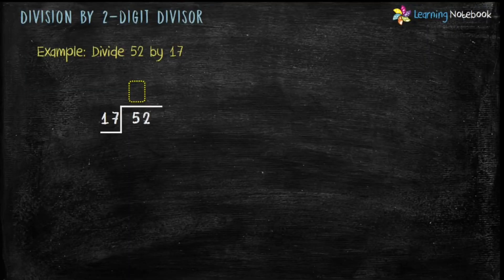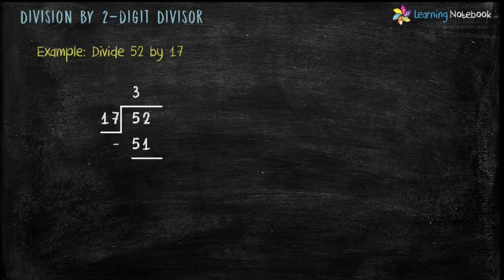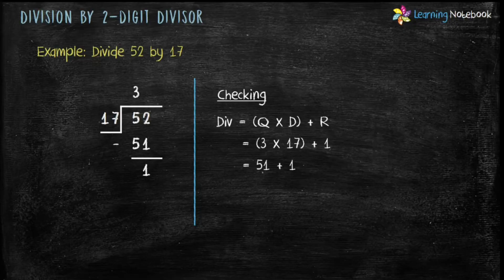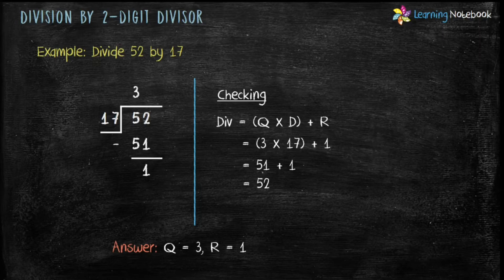Now we know the actual quotient. So let's divide 52 by 17. 17 into 3 equals 51, and 52 minus 51 equals 1. Therefore quotient equals 3 and remainder equals 1. Now let's check the answer. Dividend equals quotient into divisor plus remainder. Quotient is 3, divisor is 17, remainder is 1. So 3 into 17 plus 1: 3 into 17 equals 51, and 51 plus 1 equals 52, which is equal to the given dividend. Therefore the answer — quotient 3, remainder 1 — is correct.